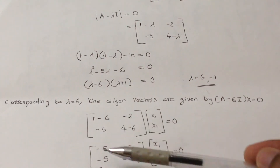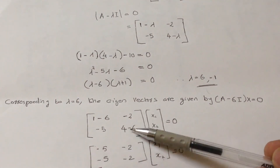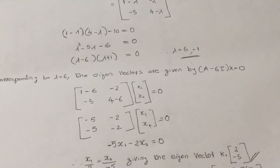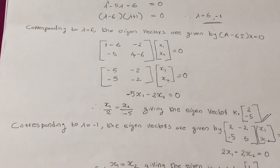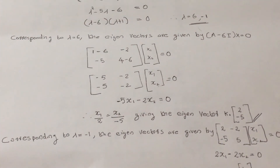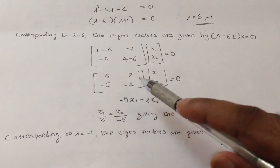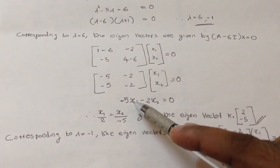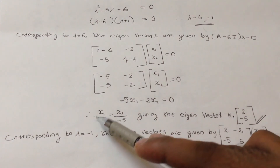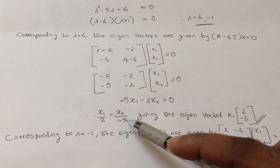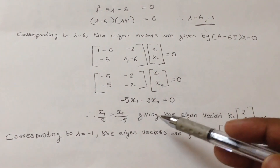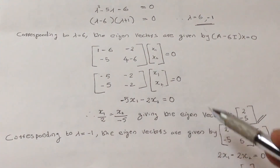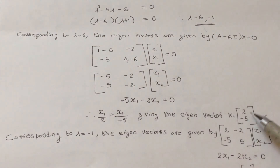That gives the matrix: minus 5, minus 2, minus 5, minus 2, times x1 and x2 equals 0. Solving, we get minus 5x1 minus 2x2 equals 0, so x1 over 2 equals x2 over minus 5. This gives the eigenvector k1 equal to [2, minus 5].